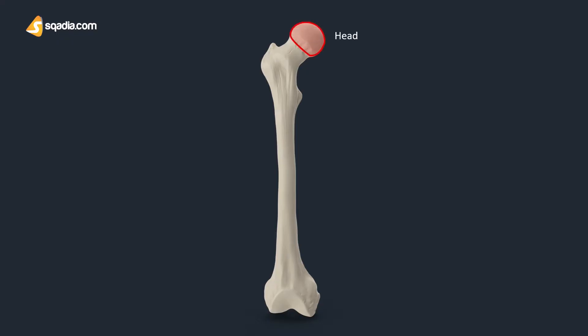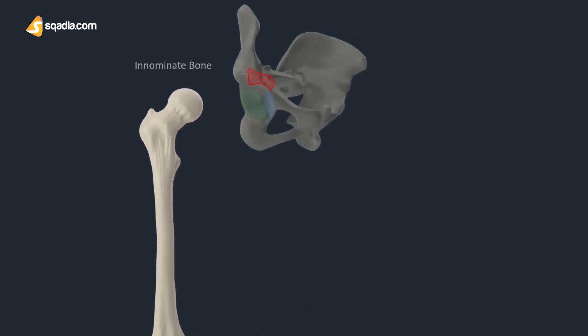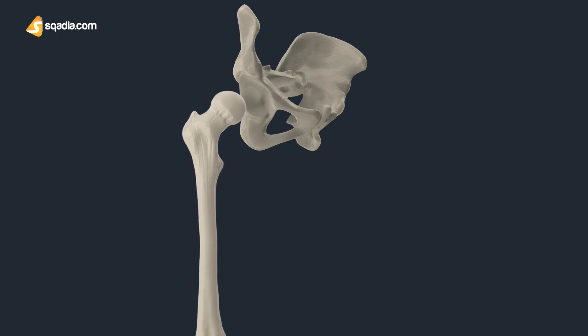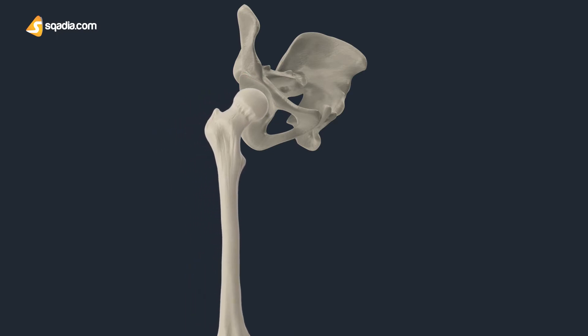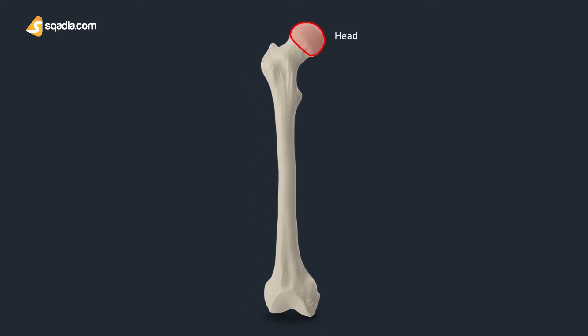This is the head, which majorly gains attention as it is the point where the bones form the hip joint with the fusion of three bones, generally known as the innominate bone. It is covered with articular cartilage and appears to be smooth because of it.